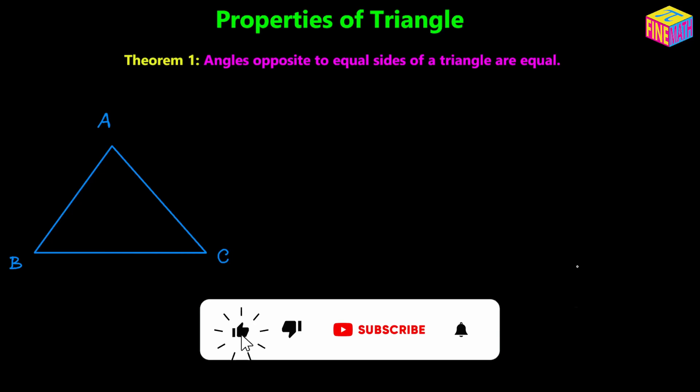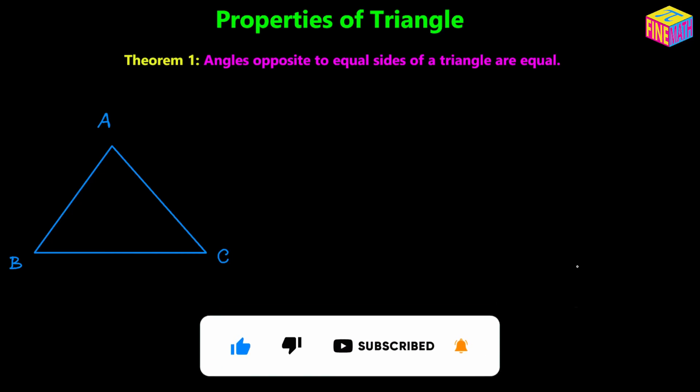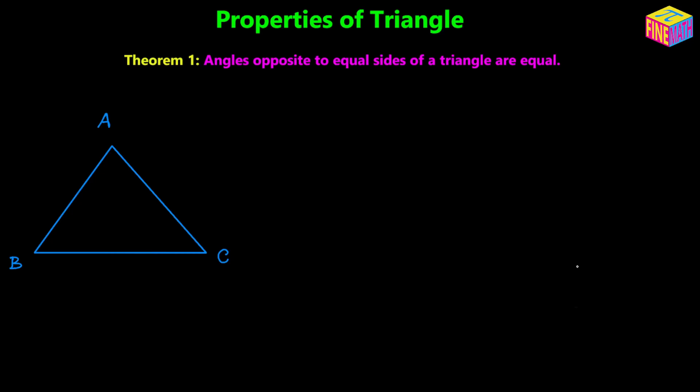So the next few videos will be on geometry — again it's all about properties of triangles, but it will be geometric properties. In this first video we are going to talk about the first theorem, which is: angles opposite to equal sides of a triangle are equal. I call it theorem number one based on my notes — not from the Elements of Euclid or any other geometry book — and that is how I am going to maintain the theorem numbers in the next few videos.